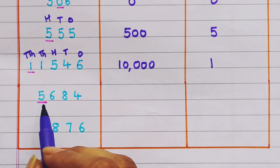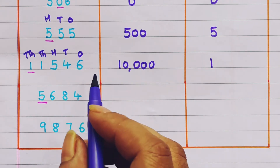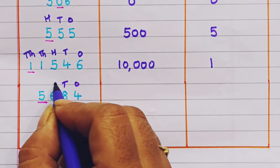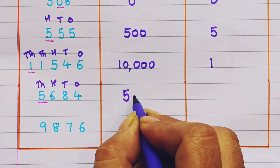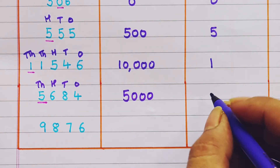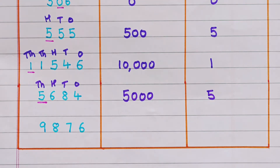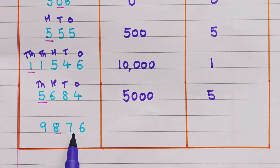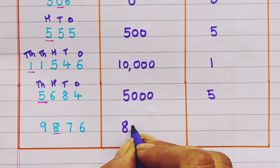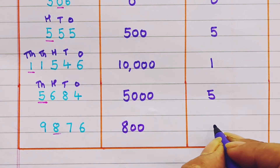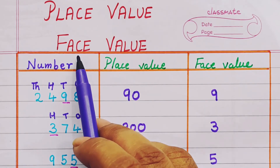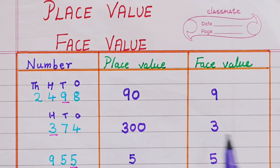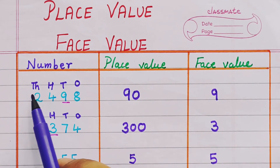Next: 5684 — ones, tens, hundreds, thousands. The place value is 5000 and the face value is 5. Now 9876: 8 is in the hundreds place, so the place value is 800 and the face value is 8.